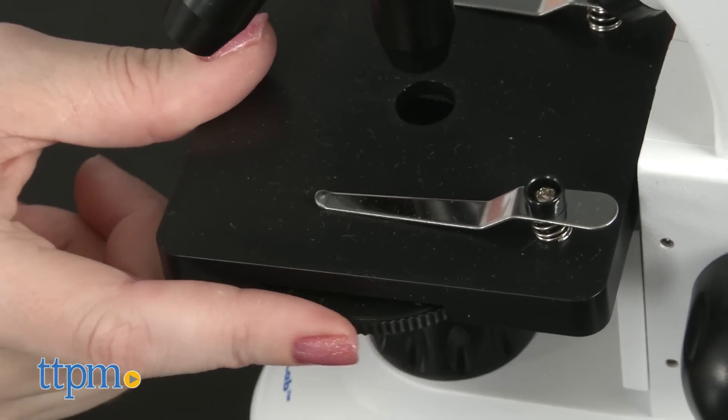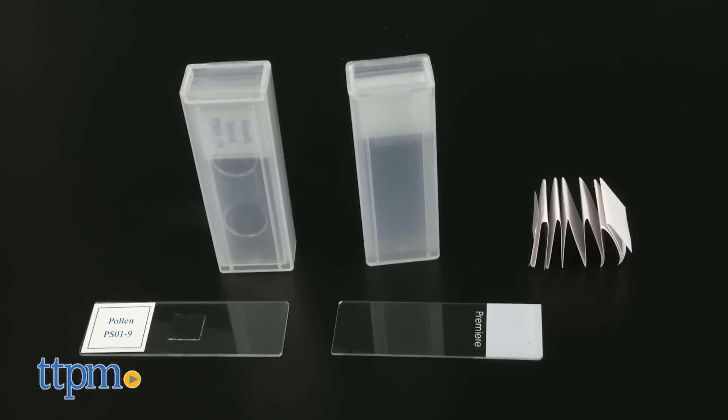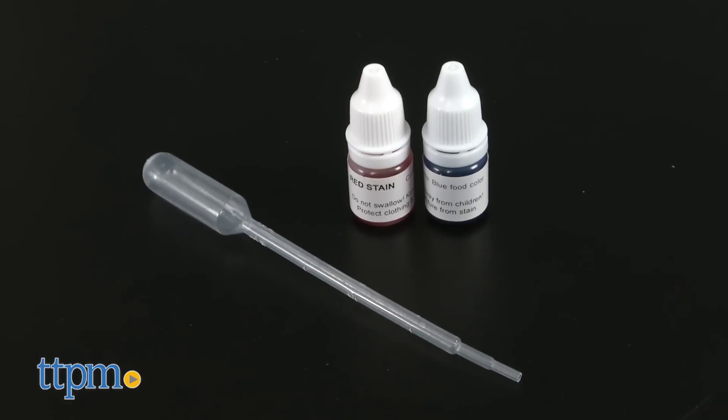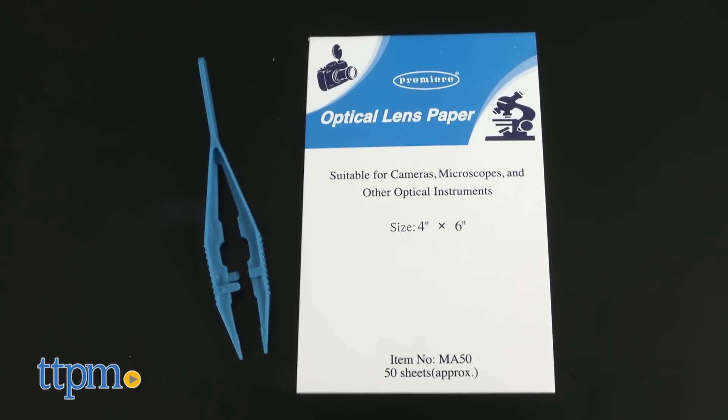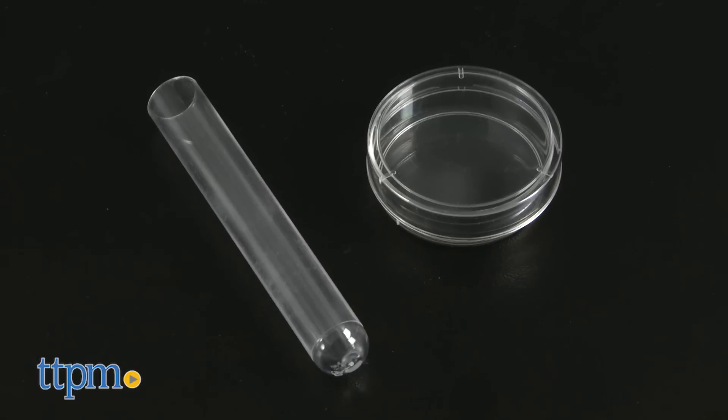Plus, you get more than 50 accessories to jumpstart your scientific research including slides and labels, a dropper, two bottles of non-toxic stain, forceps, lens paper, a test tube, and a petri dish.